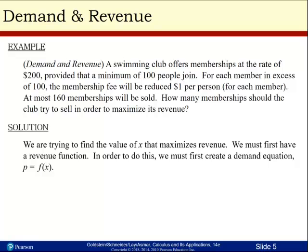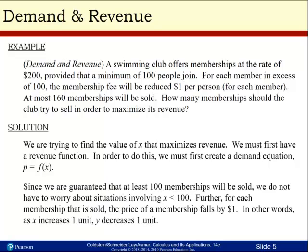We're trying to find the value of x that maximizes revenue, so we must first have a revenue function. In order to do this, we must first create a demand equation, p equals f of x. Since we're guaranteed that at least 100 memberships will be sold, we don't have to worry about situations involving x less than 100. For each membership that is sold, the price of the membership falls by $1. In other words, as x increases one unit, y decreases one unit.